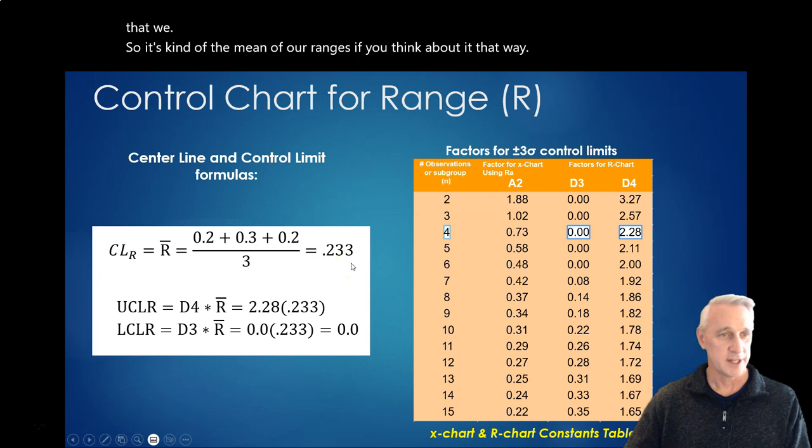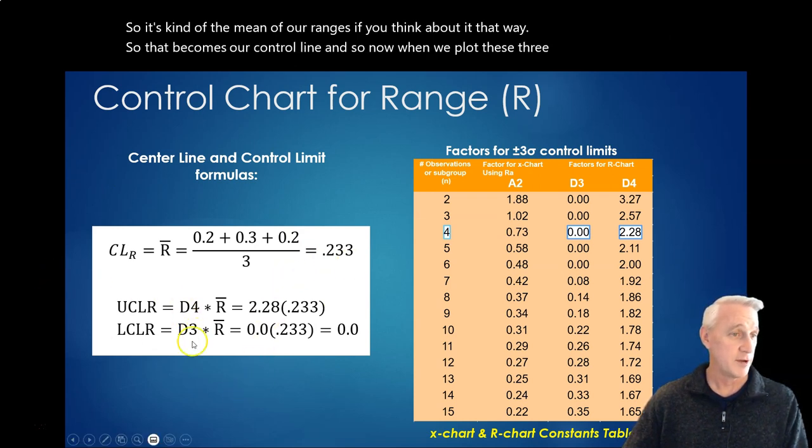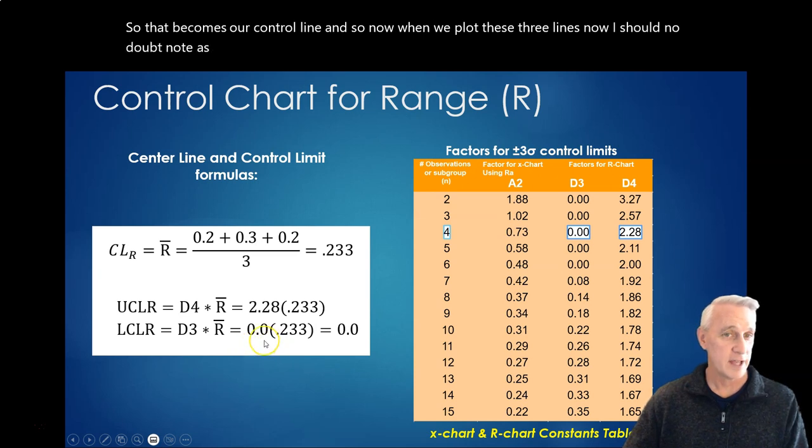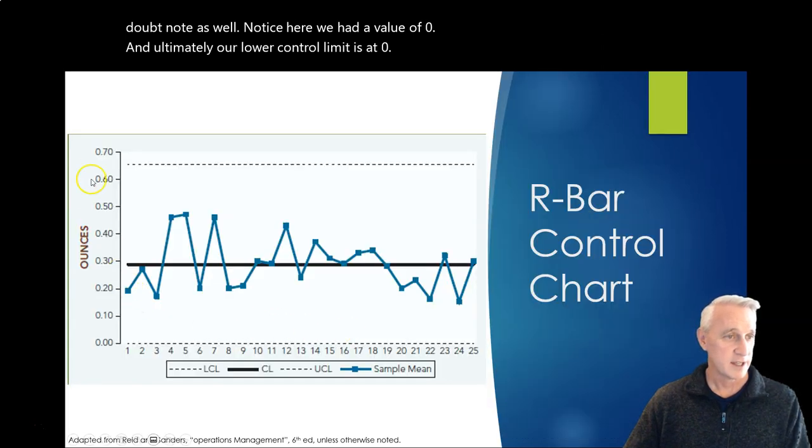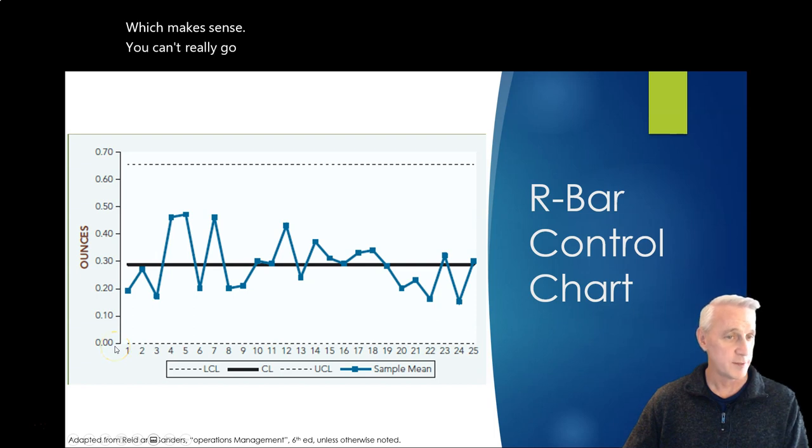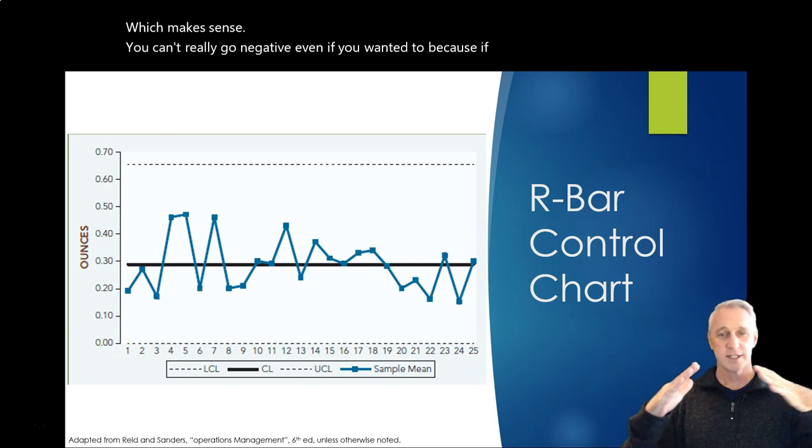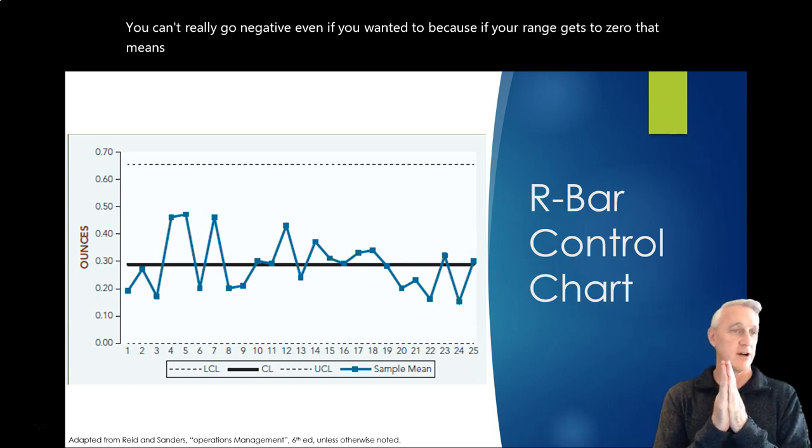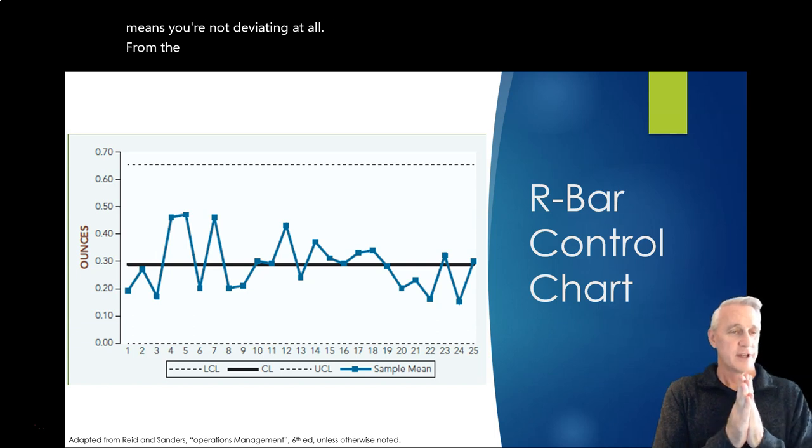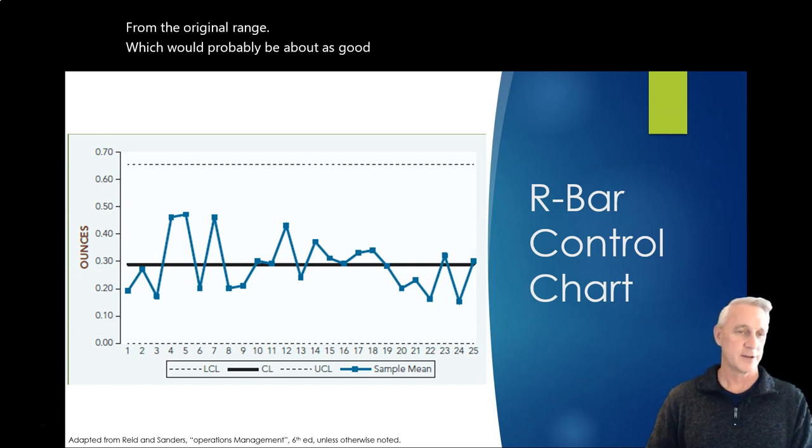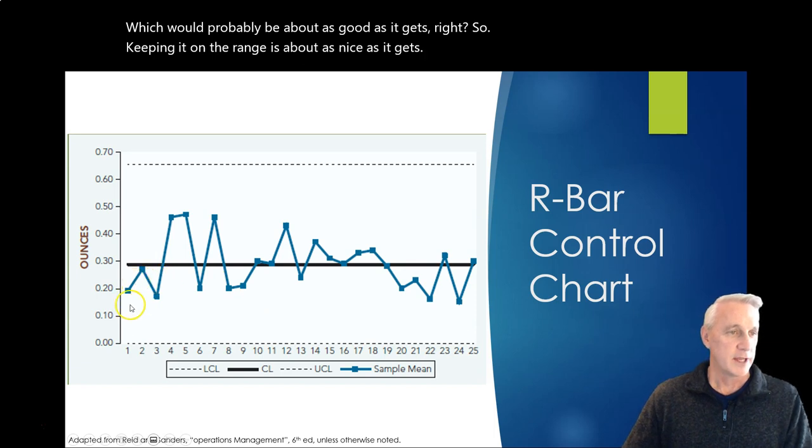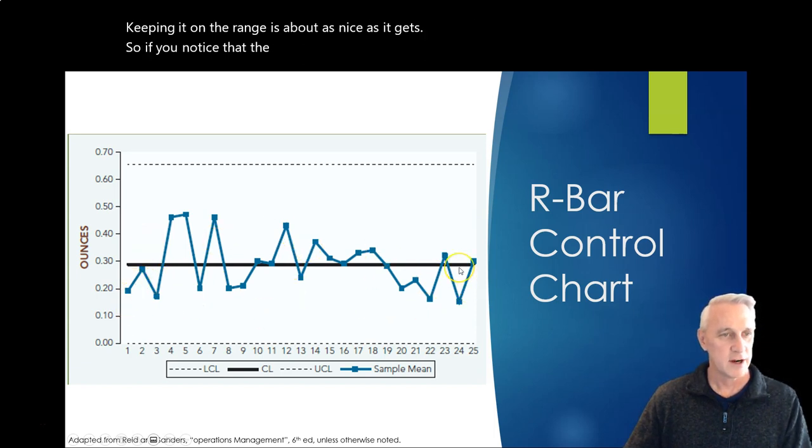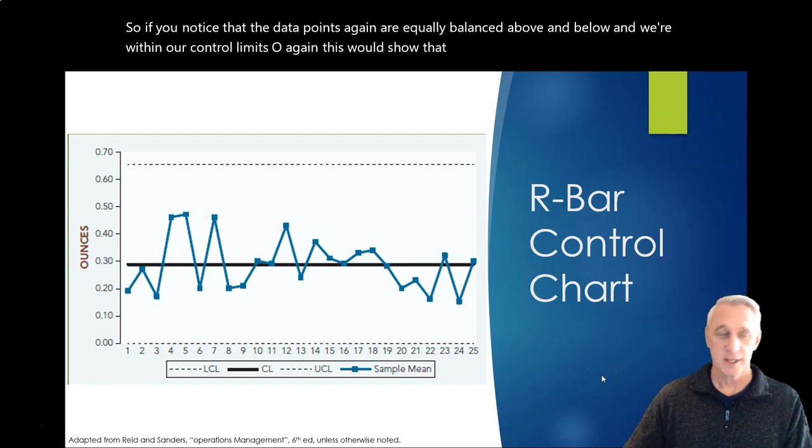Now, I should note as well. Notice here we had a value of 0, and ultimately our lower control limit is at 0, which actually makes sense. You can't really go negative, even if you wanted to, because if your range gets to 0, that means you're not deviating at all from the original range, which would probably be about as good as it gets. Right? So, keeping it on the range is about as nice as it gets. Okay, so if you notice that the data points again are equally balanced above and below, and we're within our control limits. So, again, this would show that our system is in control.